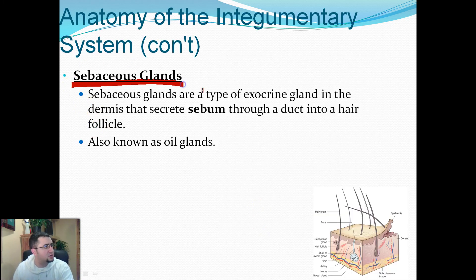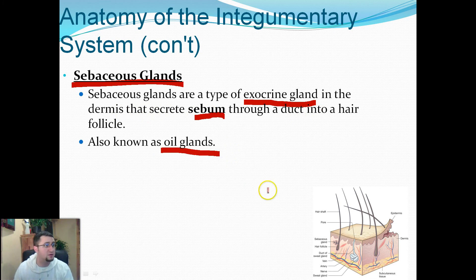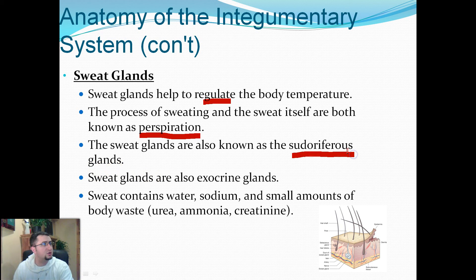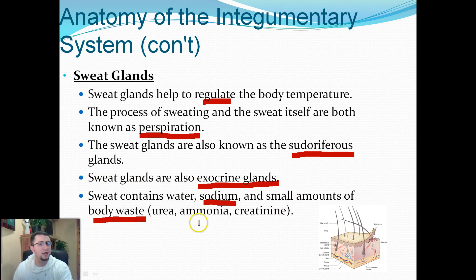Sebaceous glands are a type of exocrine gland in the dermis that secrete a substance called sebum, otherwise known as oil. When your skin gets really oily, that's actually sebum. Sweat glands produce sweat, which helps to regulate body temperature — a process known as perspiration. Sweat glands are sometimes called pseudoriferous glands and are also a type of exocrine gland. Sweat itself contains water, different kinds of salts, and small amounts of body waste, so we can actually secrete waste through sweat.